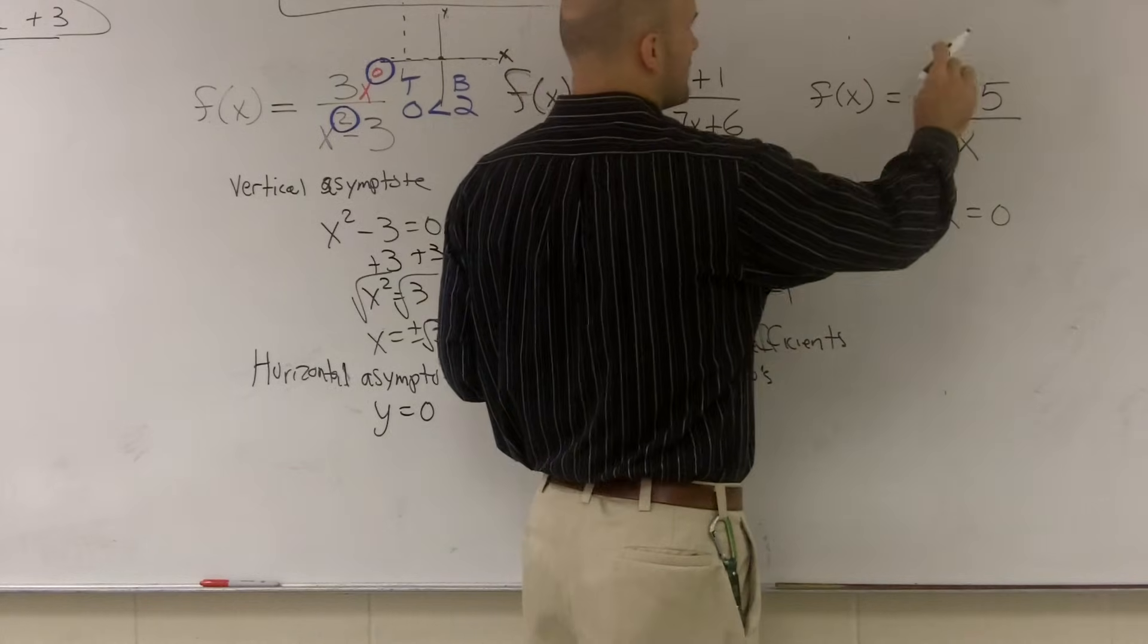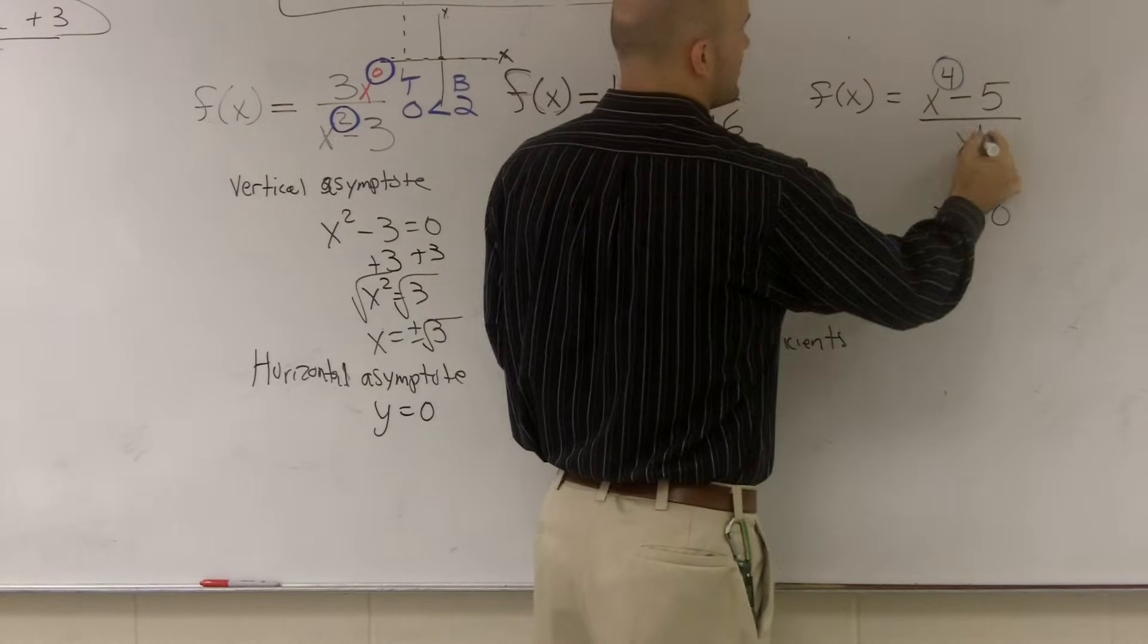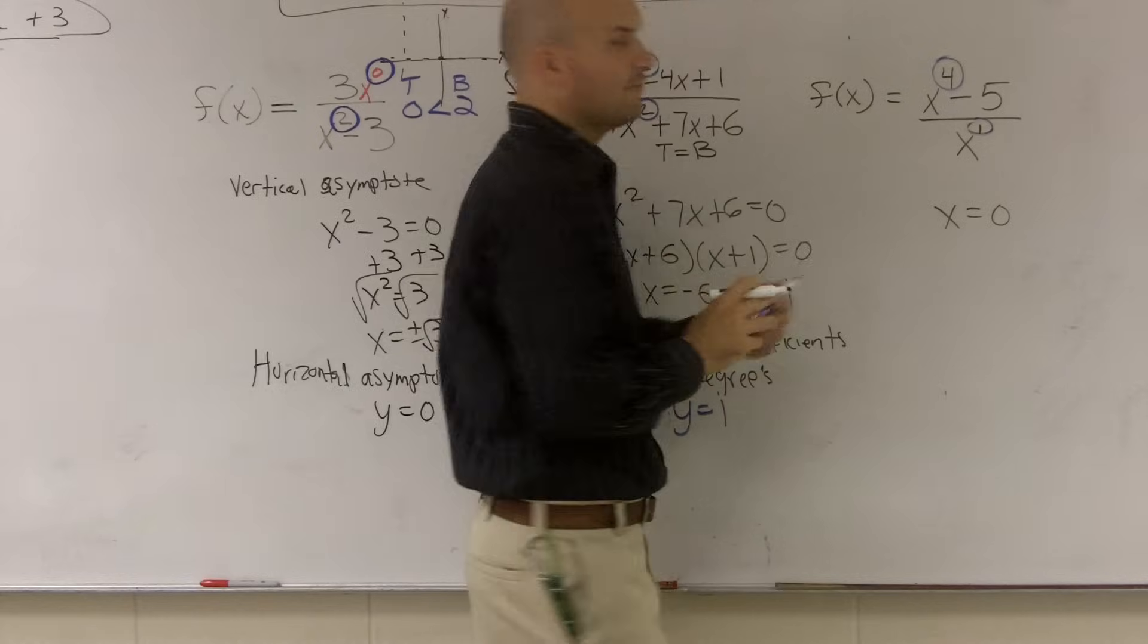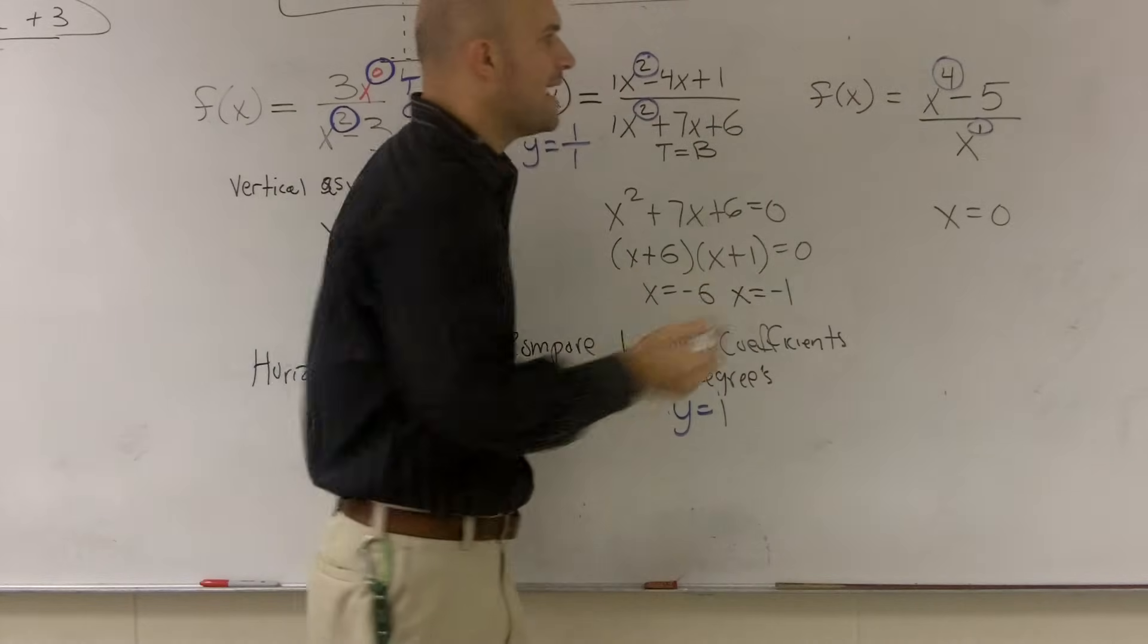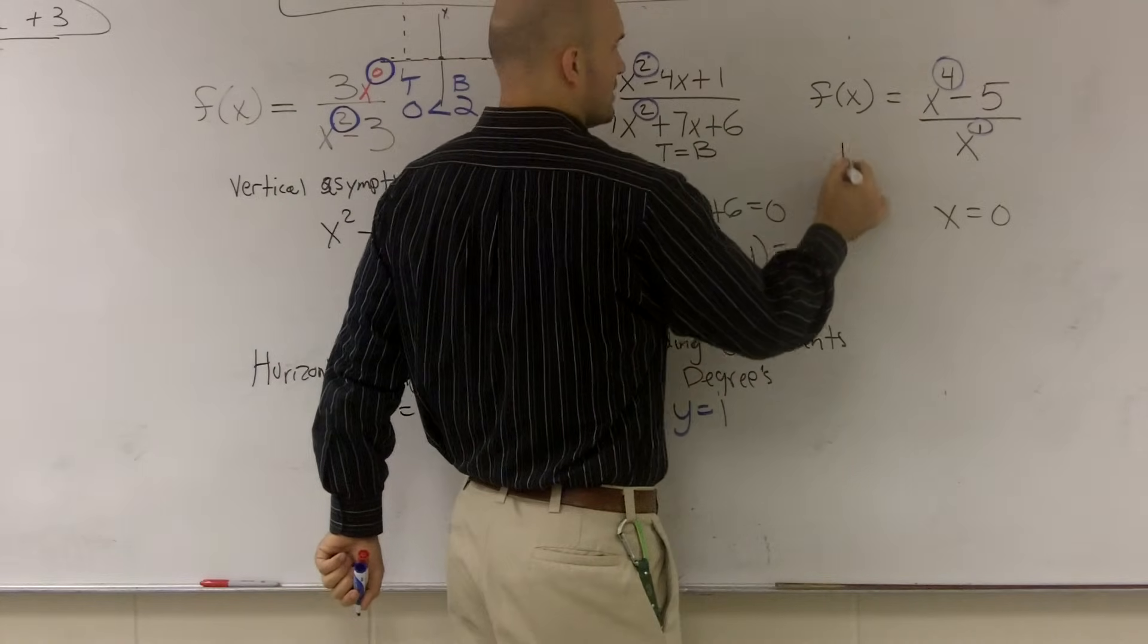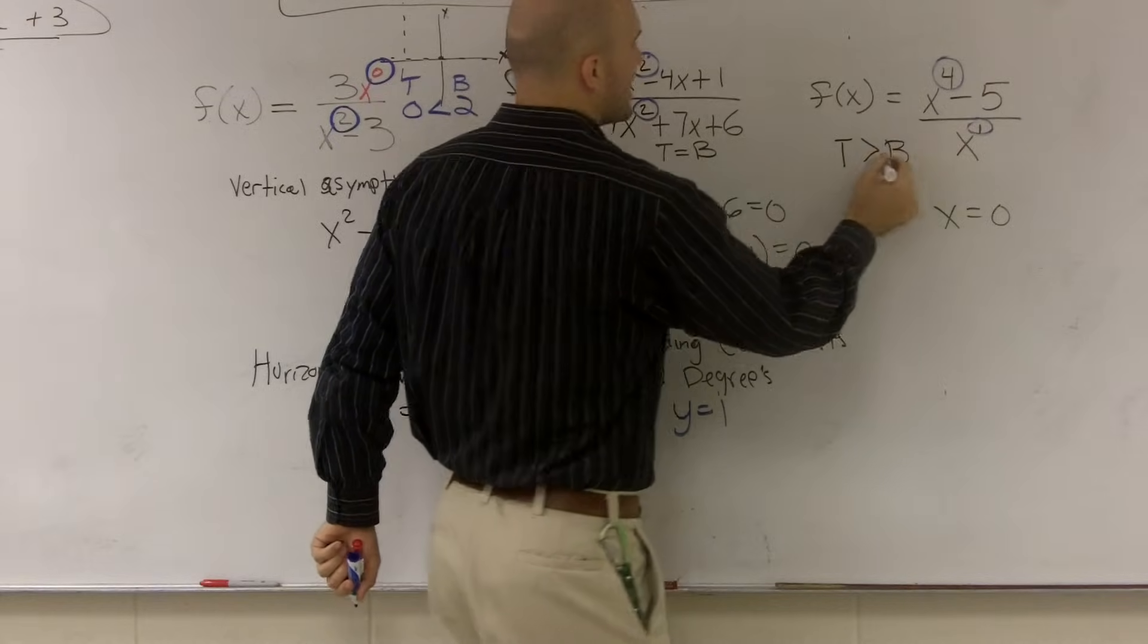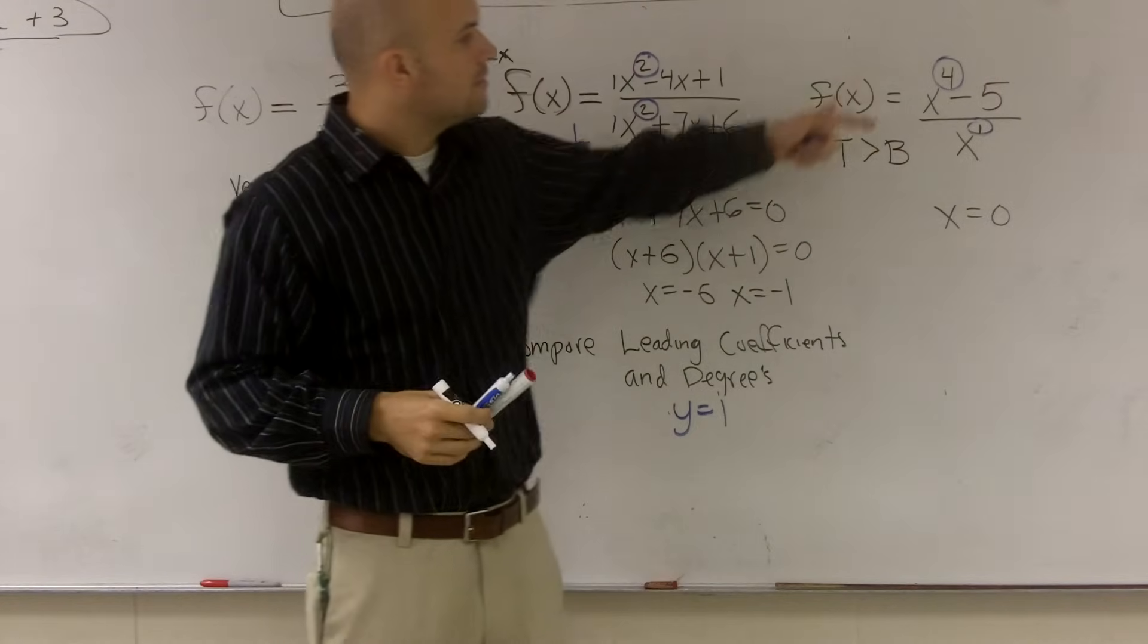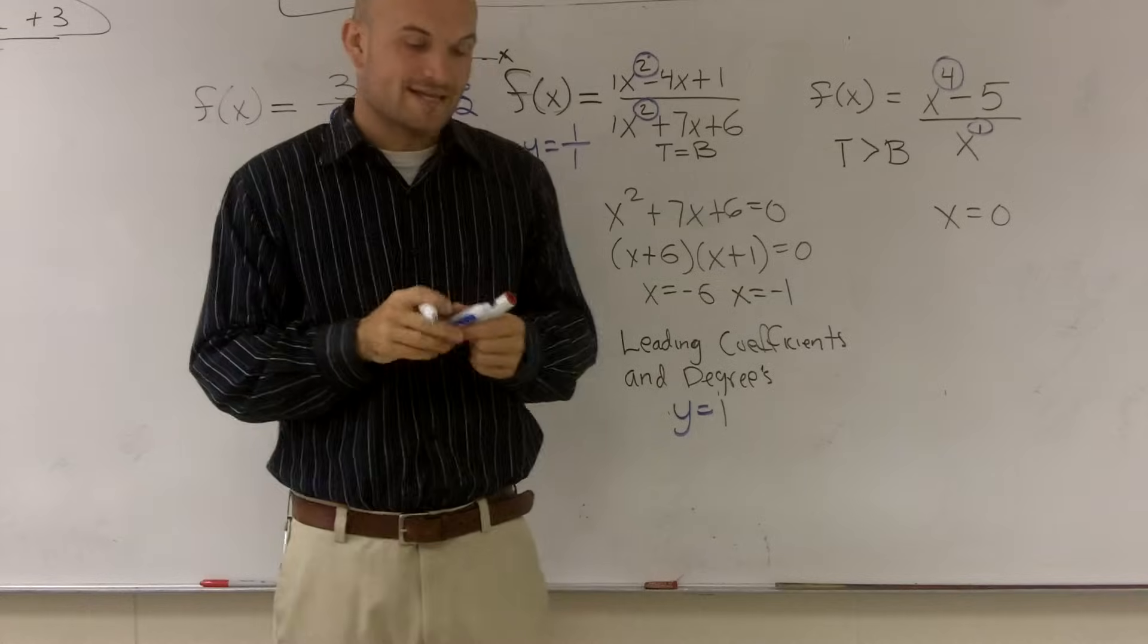And then, now when we have the top is larger than the bottom, there is no horizontal asymptote.